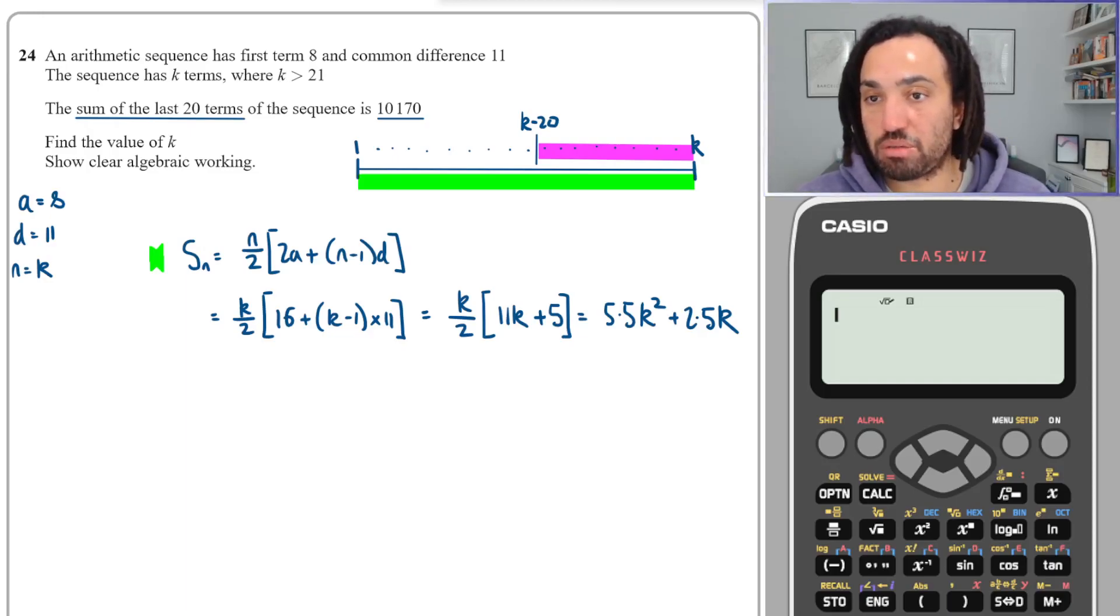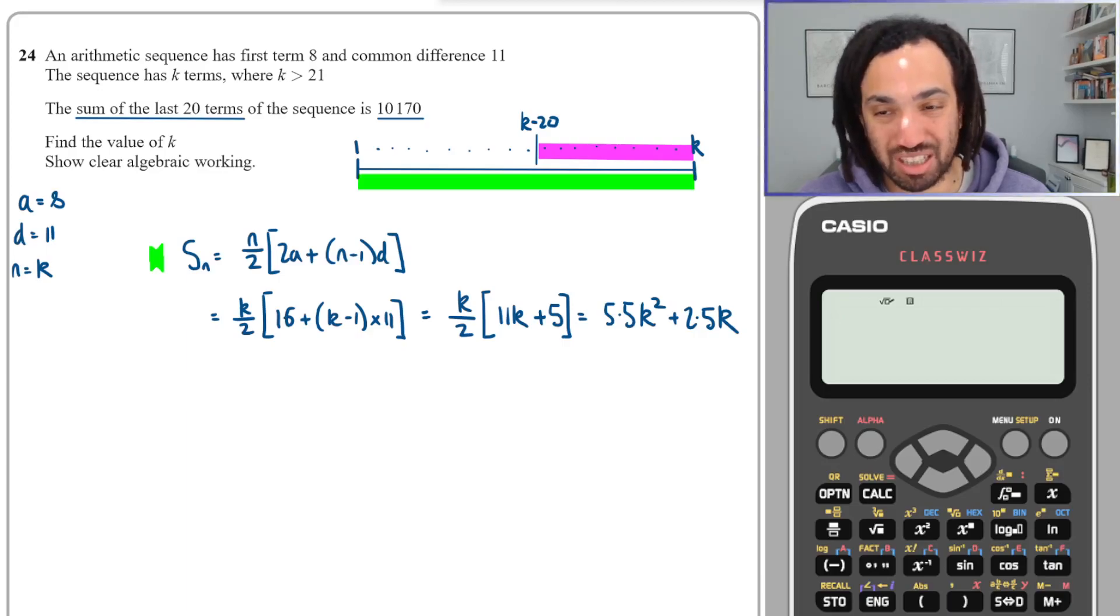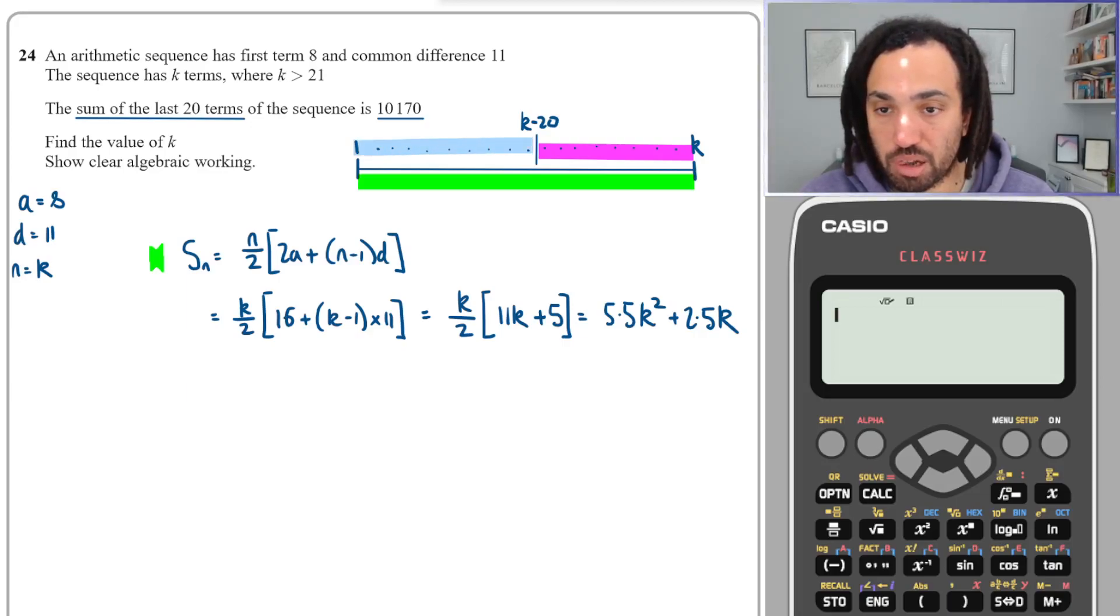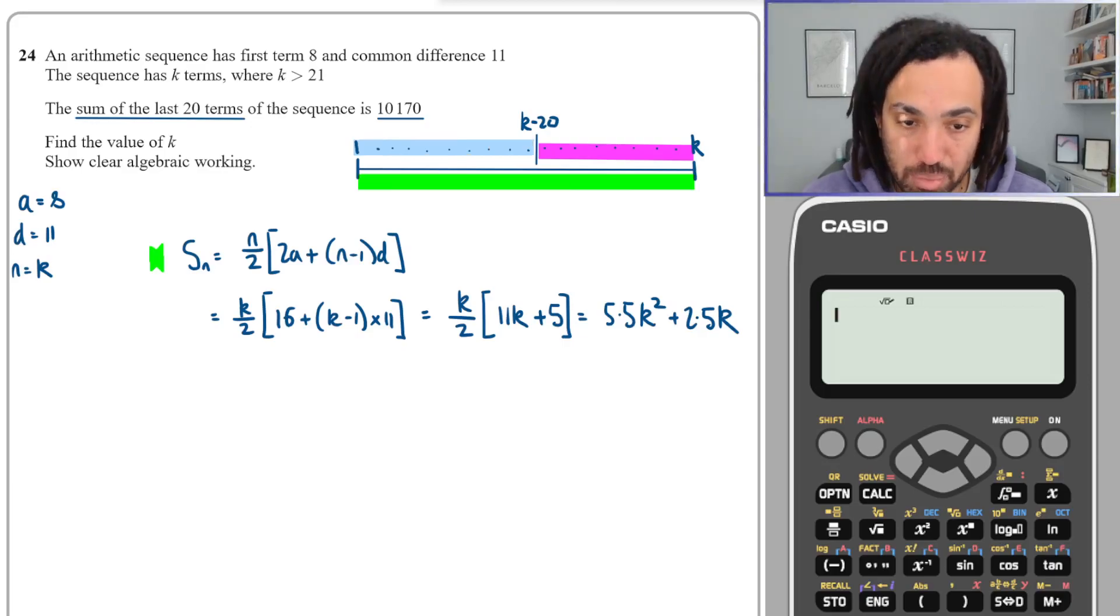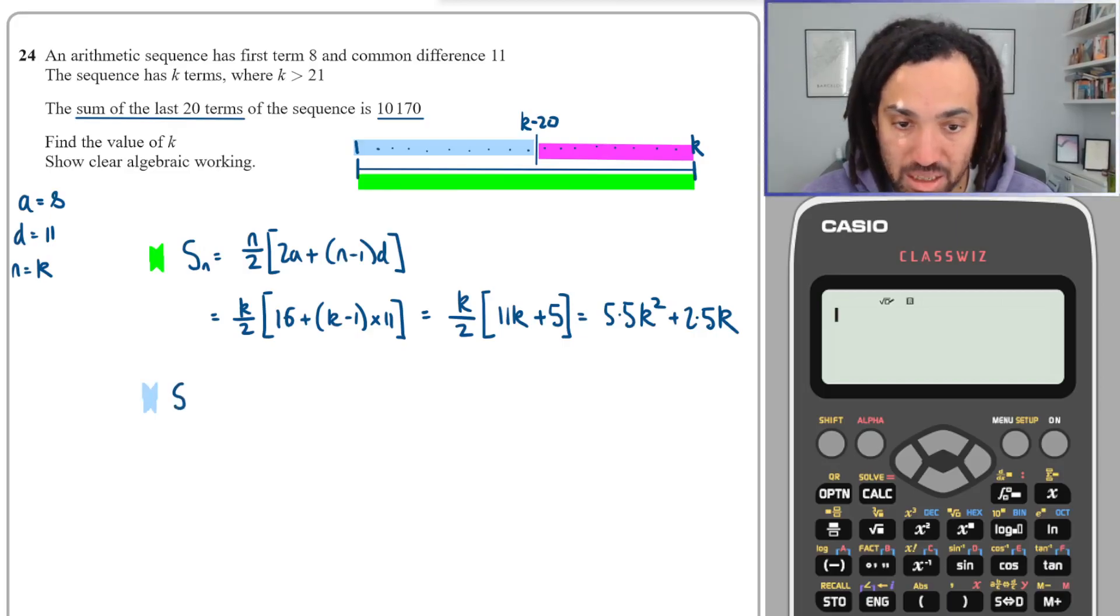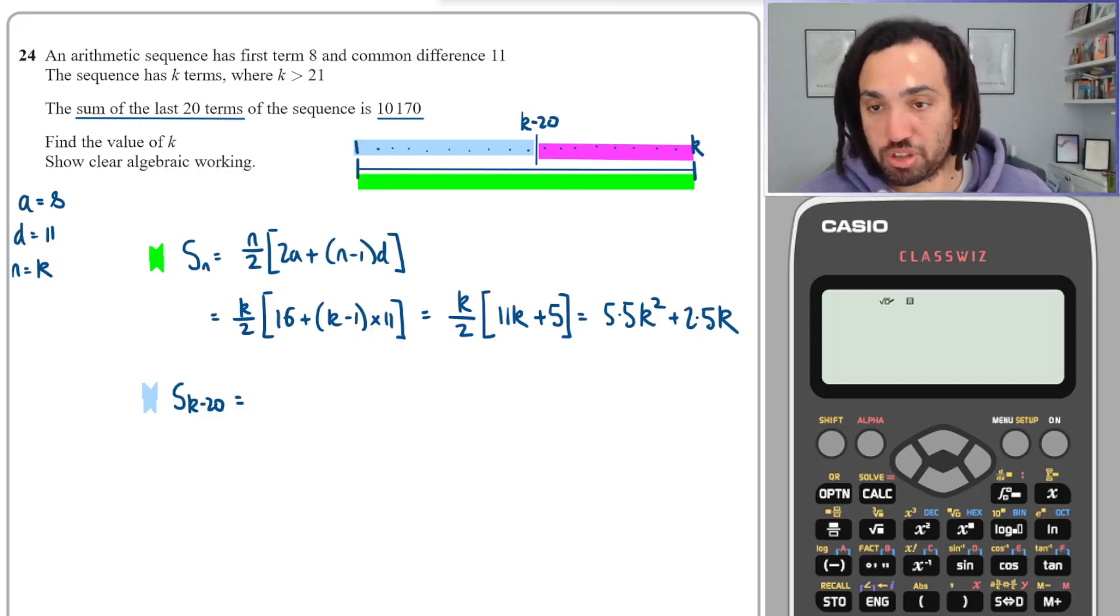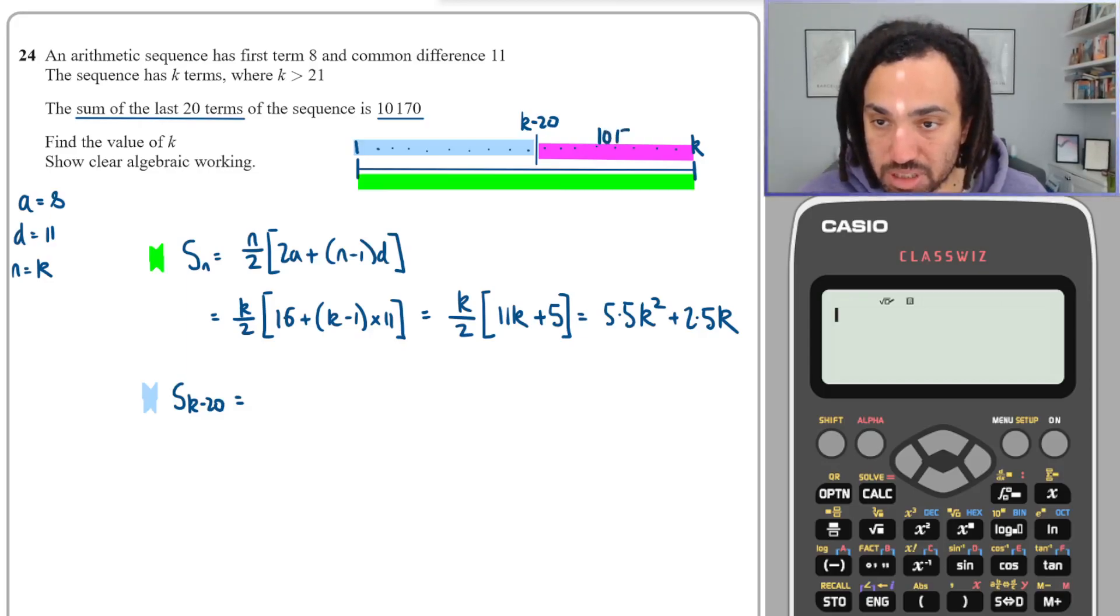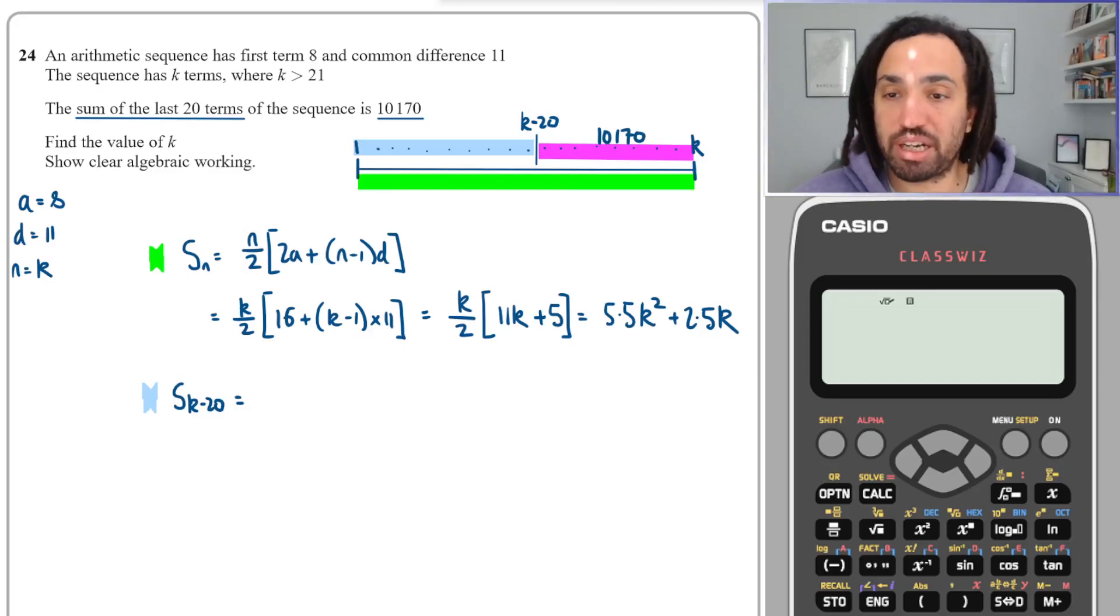Okay, well I can't work that out because I can only start from the first term. But what I could do is I can look at the blue section here. So what's that? Well, that is the sum up to k minus 20. So I would quite like to know what that would equal to, because I know this one over here equals 10,170. But I can't get an algebraic expression for it, but what I can do is find an algebraic expression for the light blue terms.